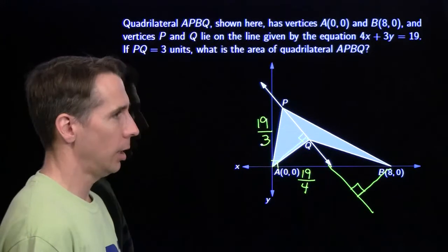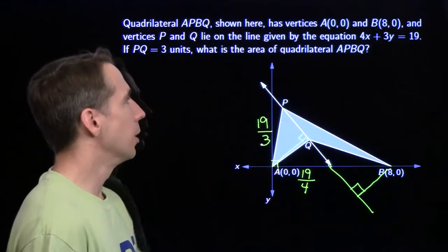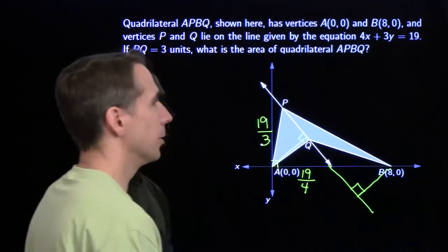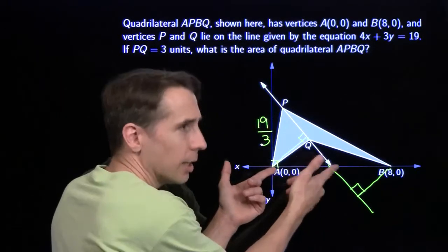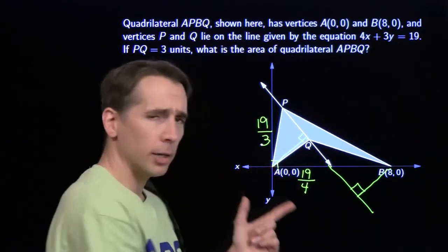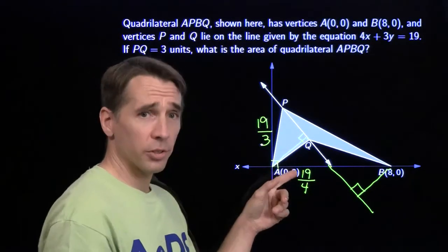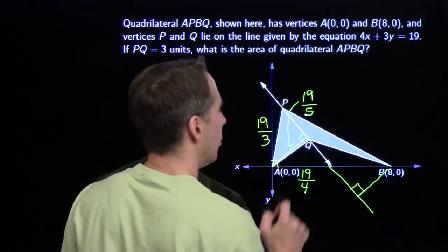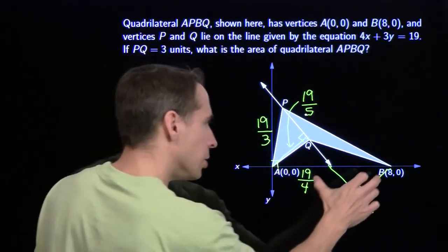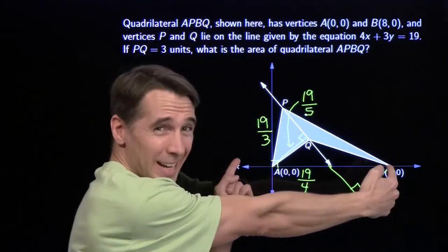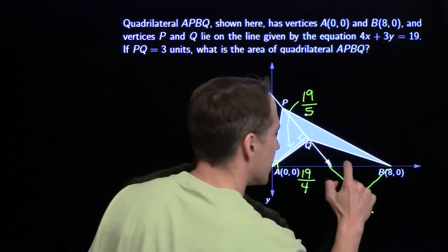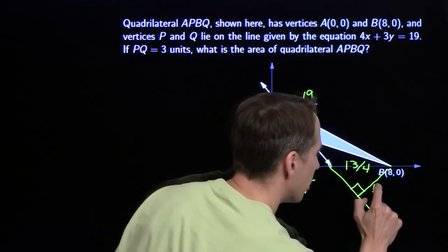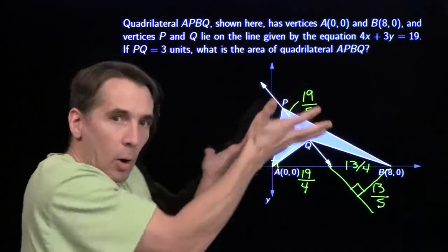I needed this length — the hypotenuse. The long leg is 4 fifths of the hypotenuse in a 3-4-5 triangle. So this height is 4 fifths of the hypotenuse, which gives 19 fifths. Then over here, because this triangle is similar to that triangle, this whole length is 8 — that's 32 quarters. Subtract 19 quarters and I've got 13 quarters. This height here is 4 fifths of the hypotenuse in a 3-4-5 triangle, so this is 13 fifths.